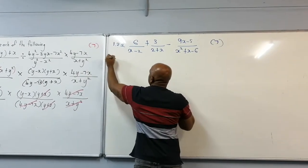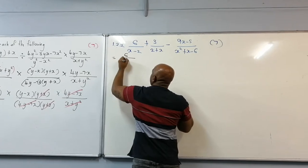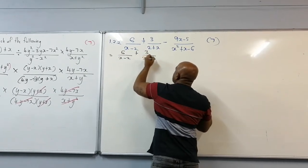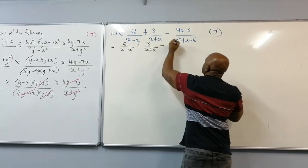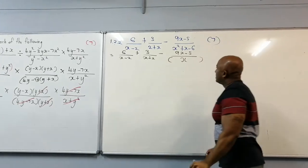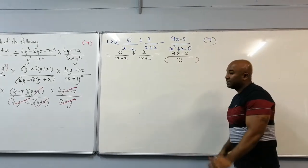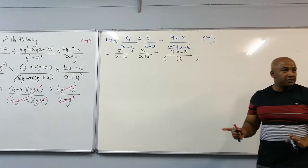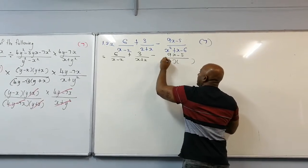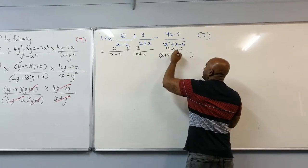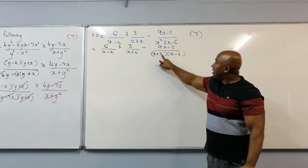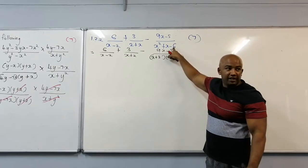We've got 6 over x minus 2, plus 3 over x plus 2, minus 9x minus 5. Then the factors of x squared plus x minus 6 — are we dealing with 6 times 1 or 3 times 2? It's 3 times 2, so that will be x plus 3, x minus 2. Because 3 minus 2 gives positive 1, and positive times negative gives negative 1.